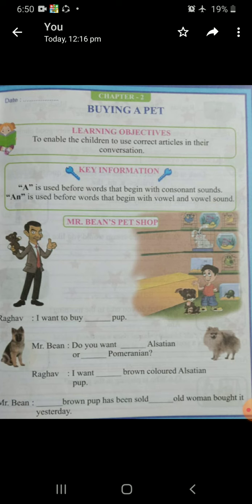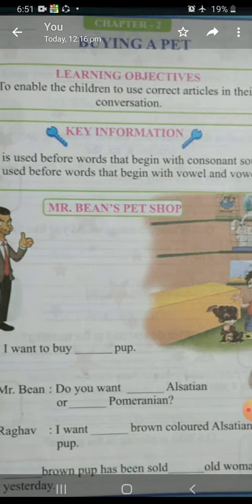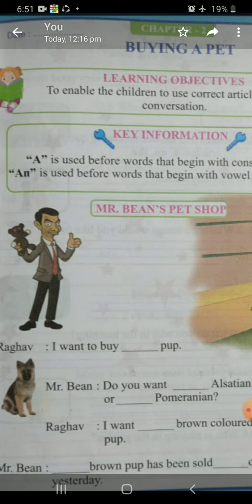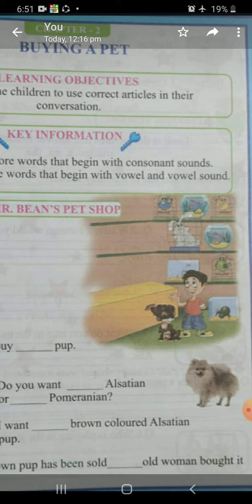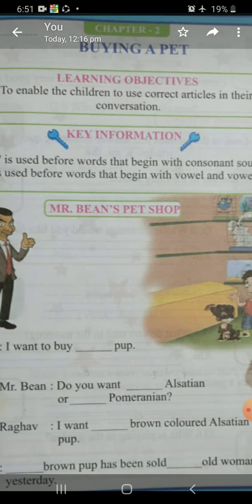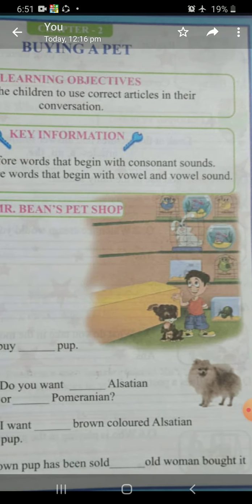First I will tell you about A and An. A is used before words that begin with consonant sounds. Means, A kahaan per use hota hai? A, us shabd ke pehle use hota hai jho shabd consonant sounds se start hota hai. And An is used before words that begin with a vowel or vowel sound.